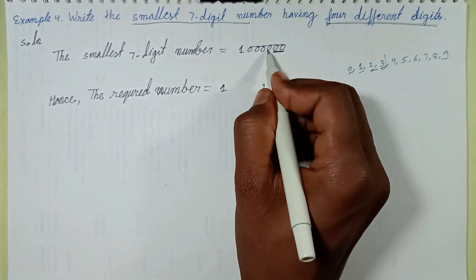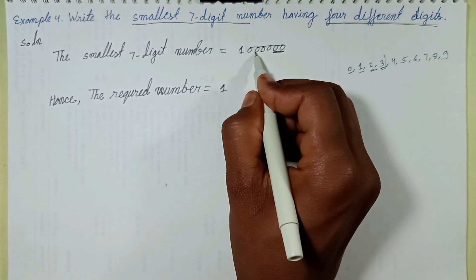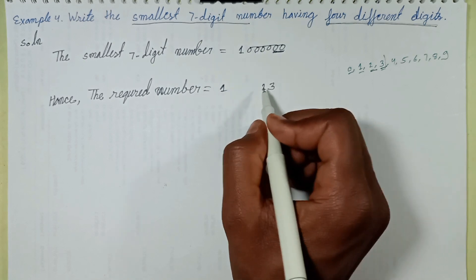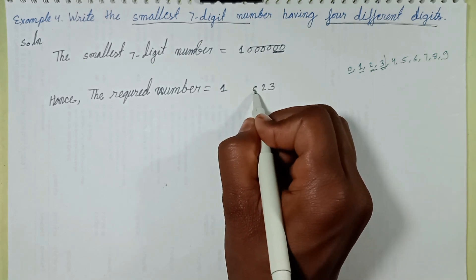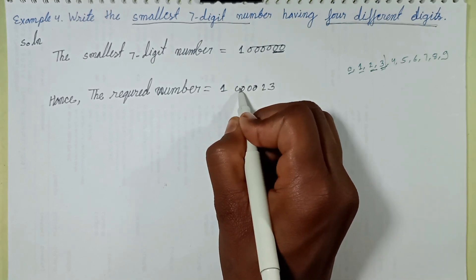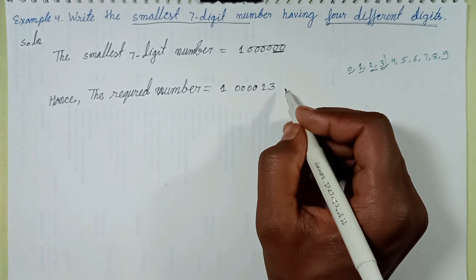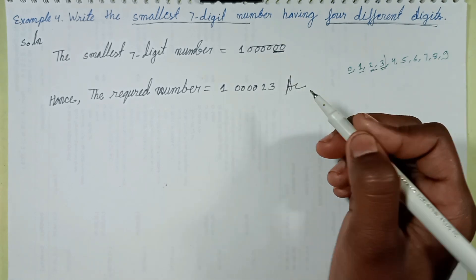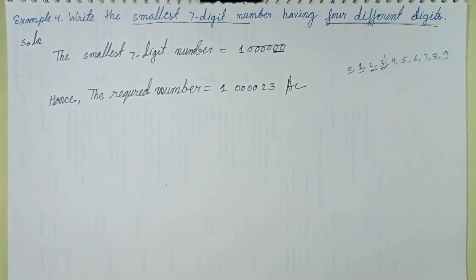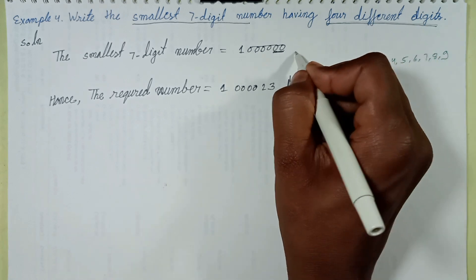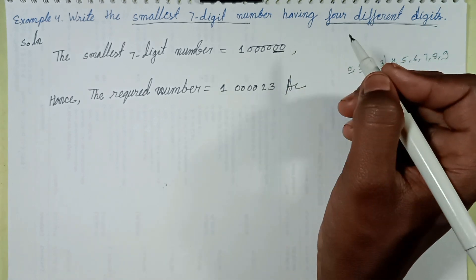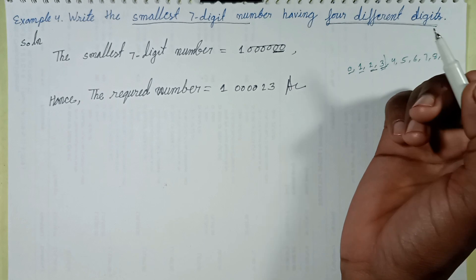The required number is 1,000,023. This is my answer — the required number with four different digits: zero, one, two, and three.